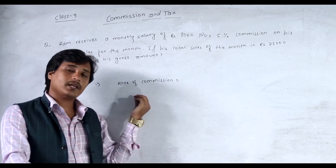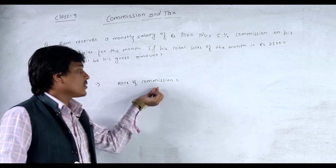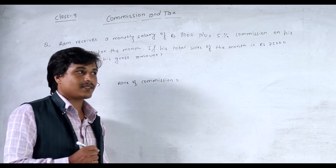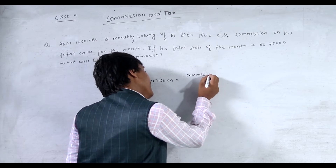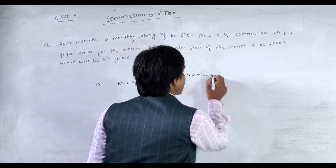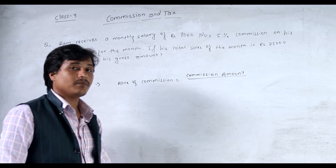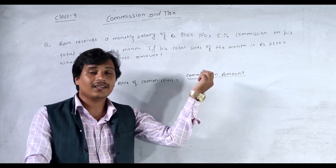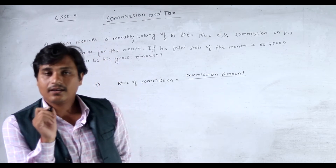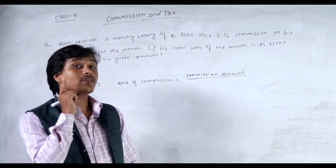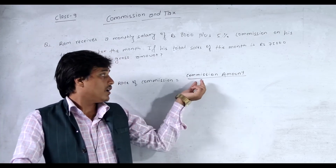I have already told you about the rate of commission and you are able to formulate it. The rate of commission formula: in the numerator you have to write the commission amount, because you are going to formulate or determine the commission rate. In the numerator, write the commission amount, and in the denominator, write the factor on which the commission rate is based.